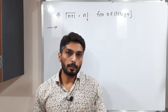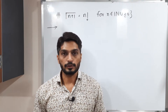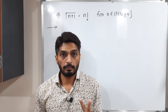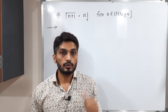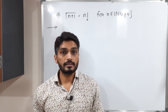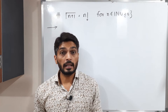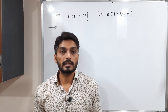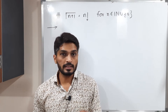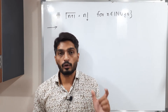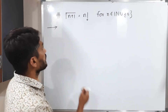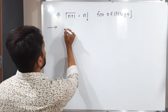Let us discuss one more property of the gamma function. We have already discussed two properties, and now we will show that γ(n+1) = n!, which is true when n is a natural number or zero. We'll start with the left-hand side.